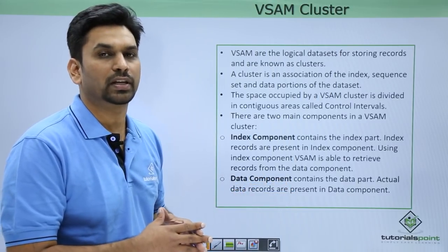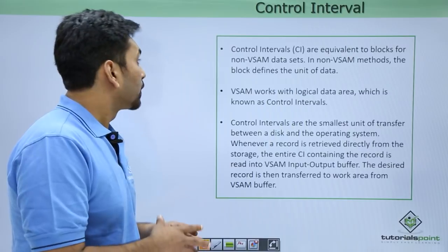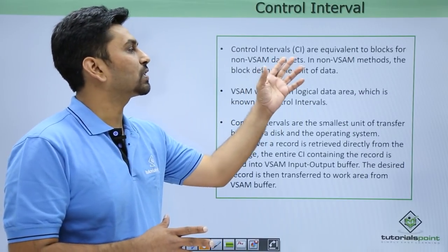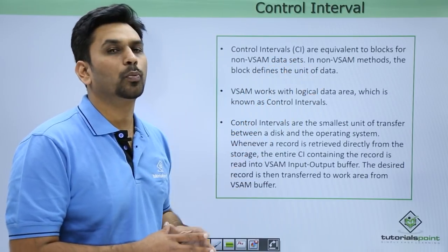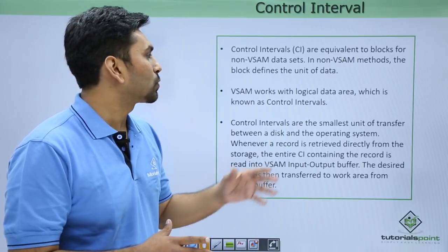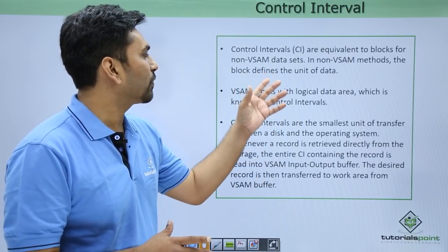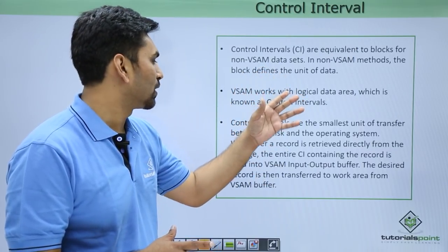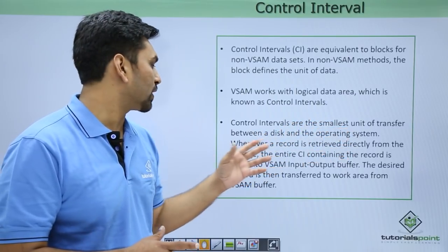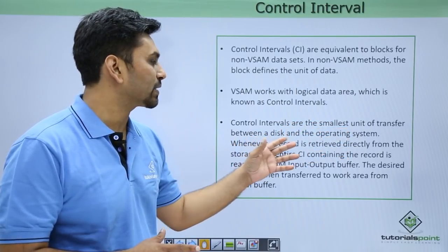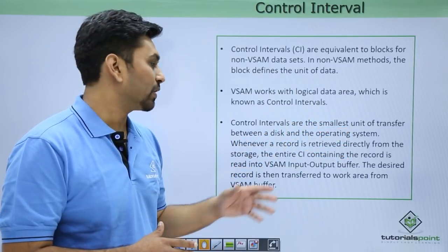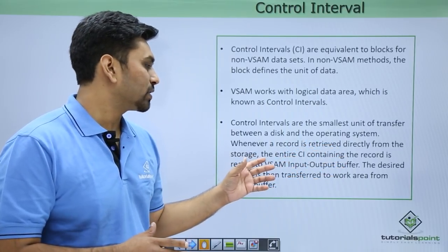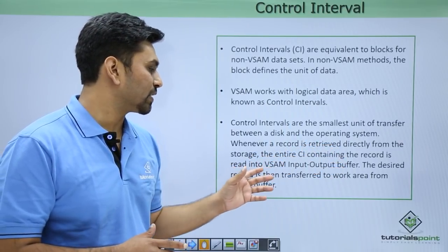The data component contains the actual data. Next is the control interval. Control intervals are equivalent to blocks in PS files — in VSAM files, instead of blocks we use control intervals. They are the smallest unit of transfer between a disk and the operating system. Whenever a record is retrieved directly from storage, the entire CI containing the record is read into the VSAM I/O buffer.